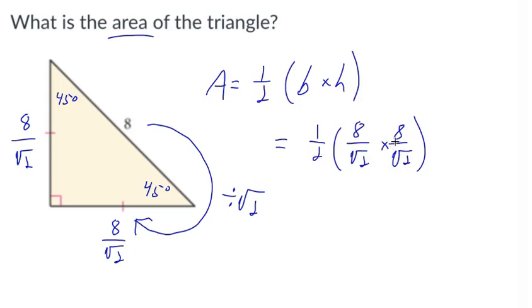Let's multiply these fractions inside the parentheses first. Multiplying across the top, we get 64. Multiplying across the bottom, we get the square root of 2 times the square root of 2, which equals the square root of 4, which equals 2.